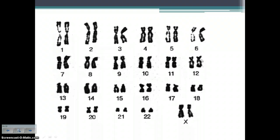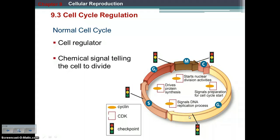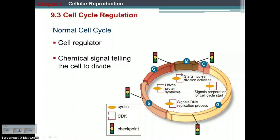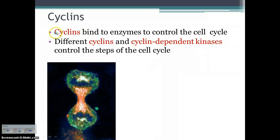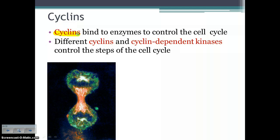A karyotype is a map of somebody's chromosomes — you can see the 23 pairs here. The 23rd pair is your sex chromosomes. This person has two X chromosomes, which means this person is female. Regarding cell regulators: at each checkpoint in the cell cycle, the cell stops and checks whether everything has been done correctly. We have chemical signals called cell regulators — cyclin is one of those, which binds to enzymes to control the cell cycle. Different cyclins and cyclin-dependent kinases control when the cell continues dividing or stops.